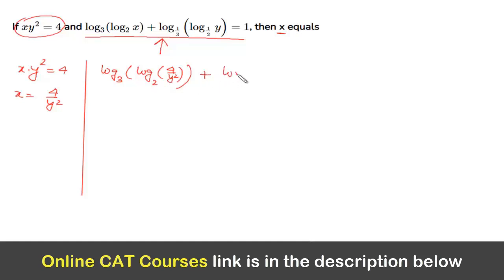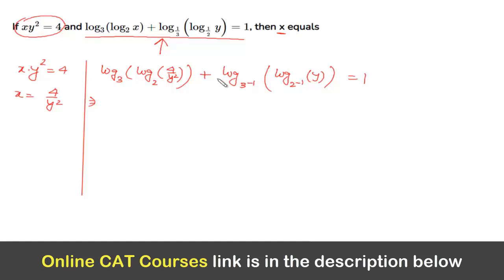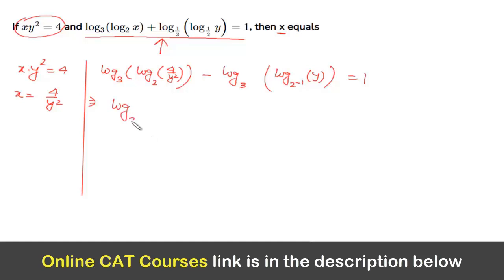We rewrite the second term as log base 3 of (2^(−1)·y), because we need the same base to apply log properties. The −1 exponent can be brought outside, becoming a coefficient of −1. So the expression becomes log base 3 of (4/y²) minus log base 3 of y, which by the quotient rule equals log base 3 of (a/b).